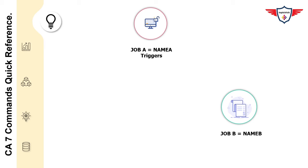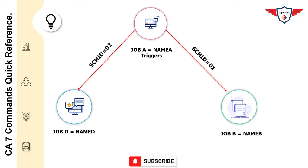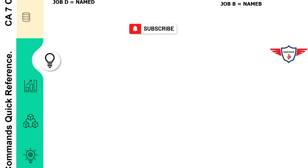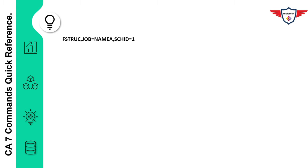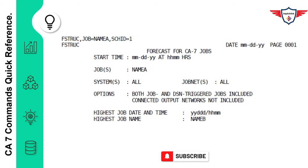Let's look at a couple of examples so you can understand what information is displayed on the CA7 screen when you fire this command. In this example, we have three jobs — Job A, Job B, and Job D — with two different schedules. In the first schedule, Job A triggers Job B, and in the second schedule, Job A triggers Job D. To display the structure of the first schedule, you use the F-STRUCF command followed by a job name and schedule ID. When you enter this command and hit Enter, the following details are displayed on the screen, showing general information about Job A, including the name of the last job it triggered when it ran under schedule ID 1.